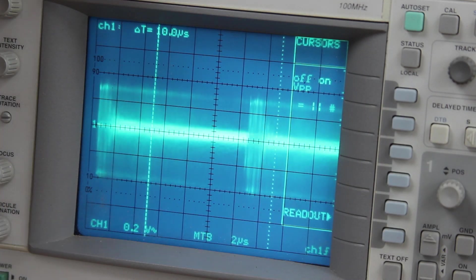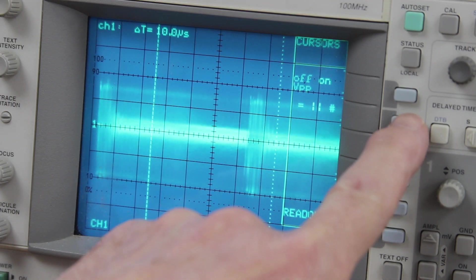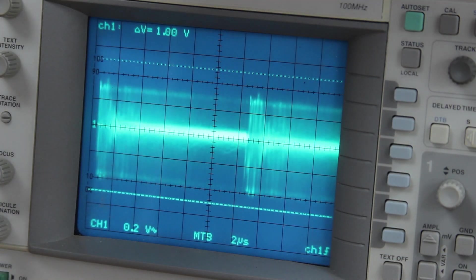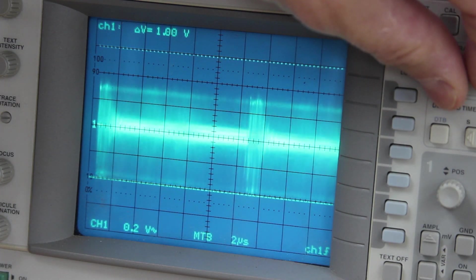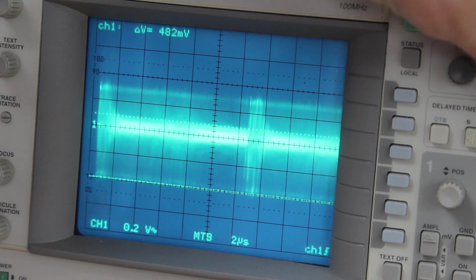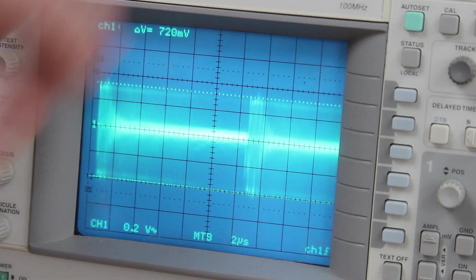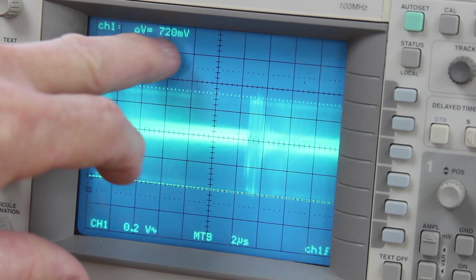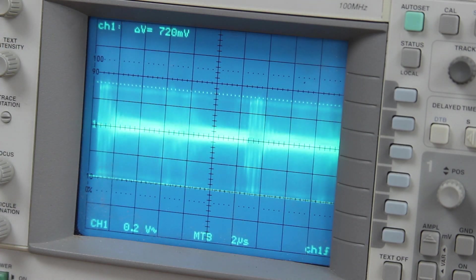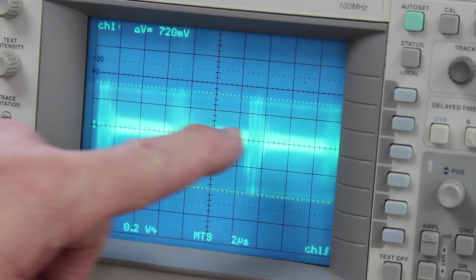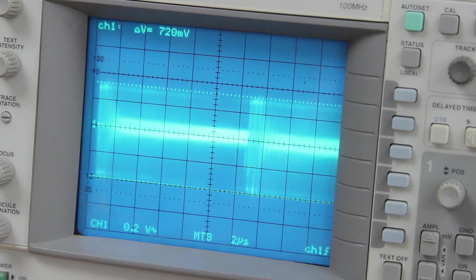So let me bring the cursors in and we will measure that. Where are the cursors? There we get cursors, and we want voltage. Yeah, turn the text off. So there we go. If we set that to there and that one to there, we have 720 millivolts, which is 0.7 of a volt. And this is a 10 to 1 probe, so that's about seven volts.